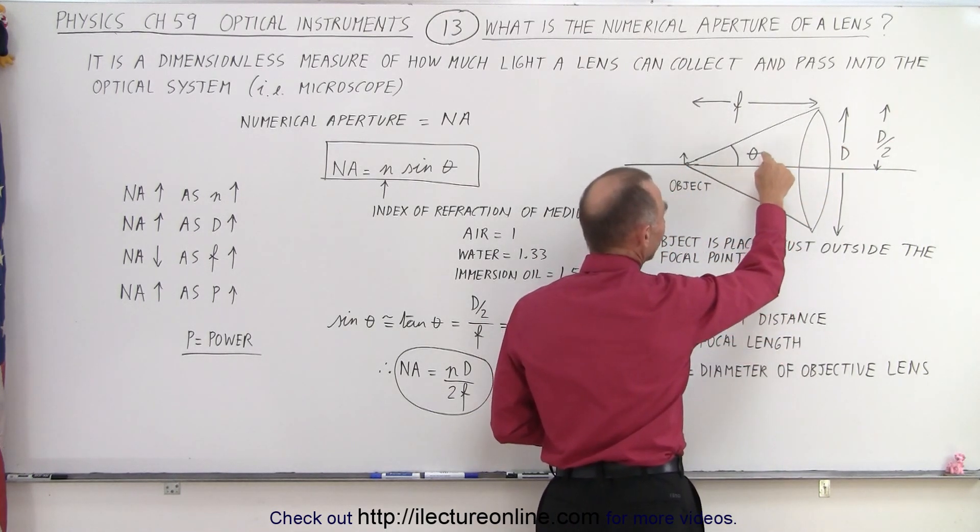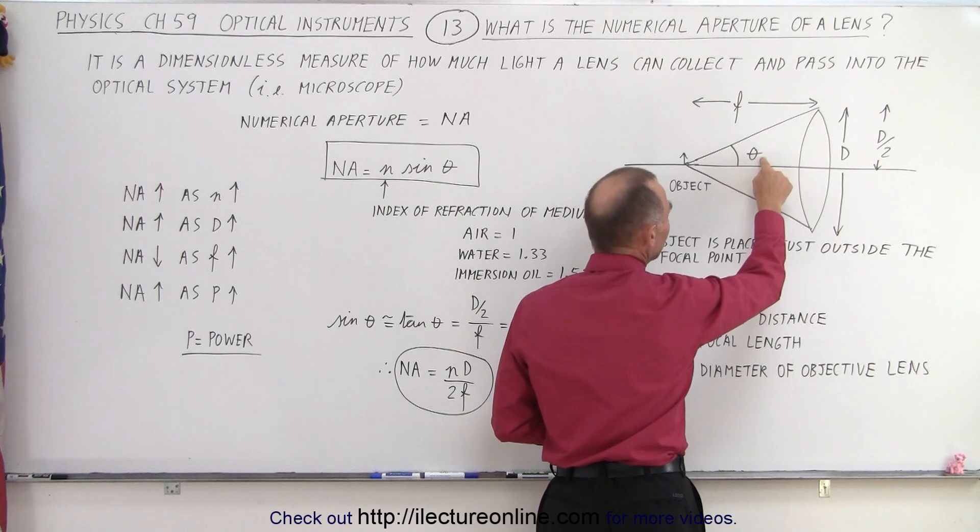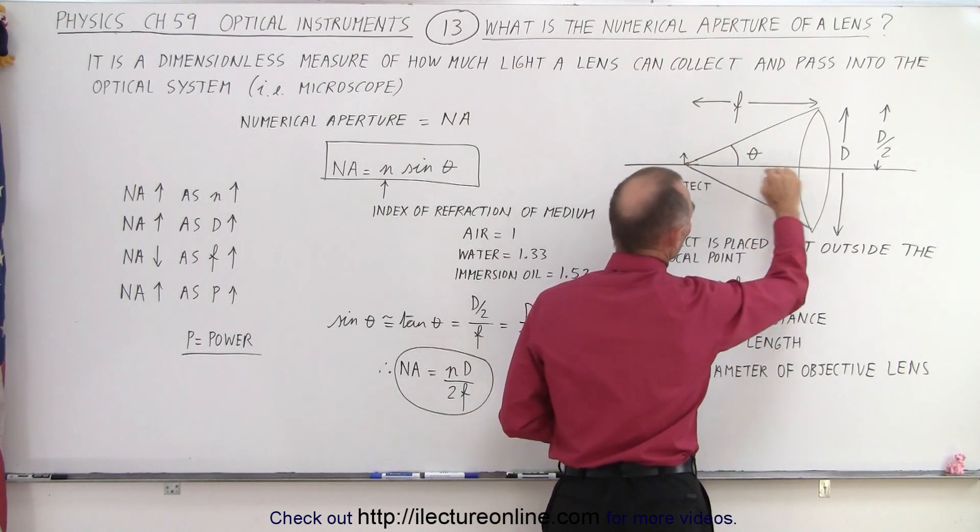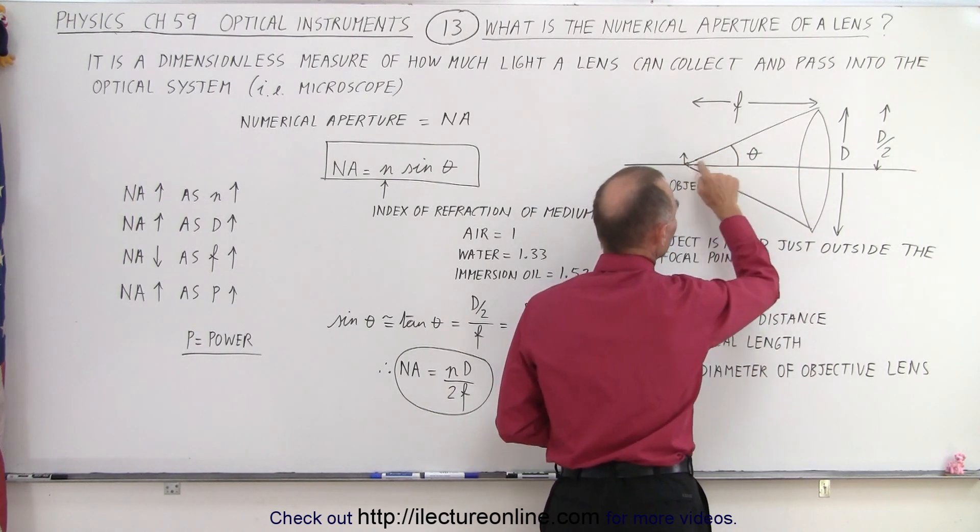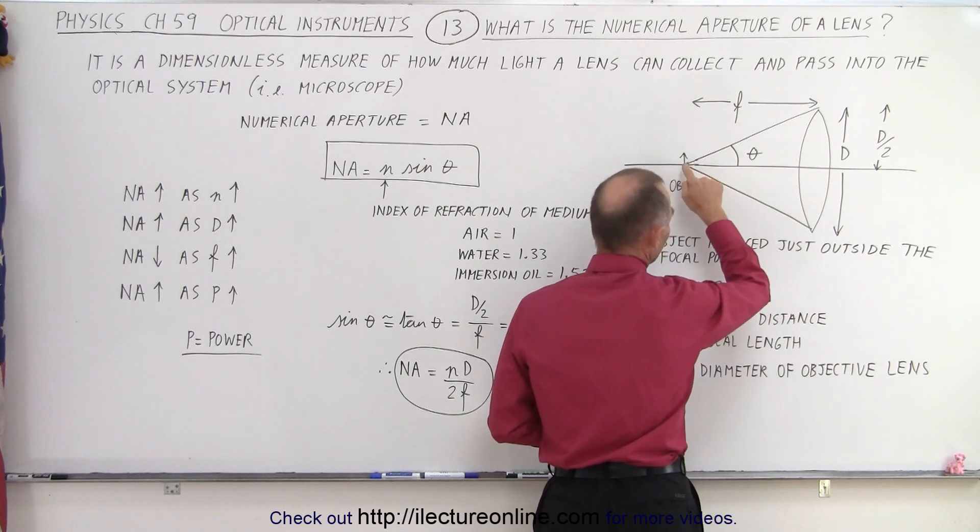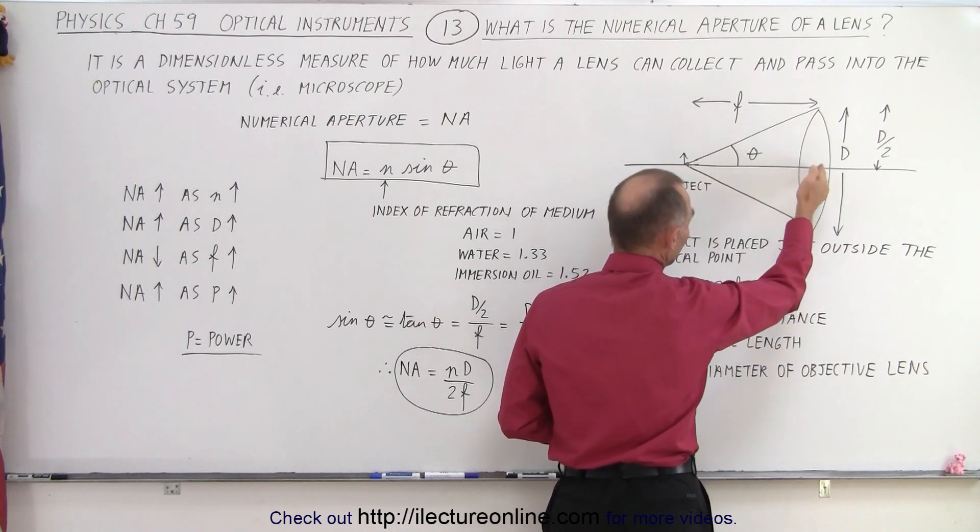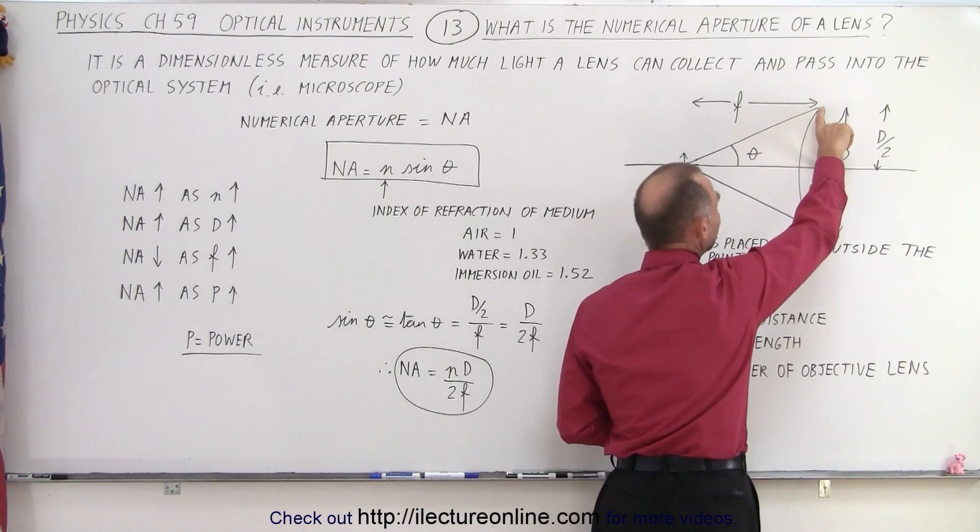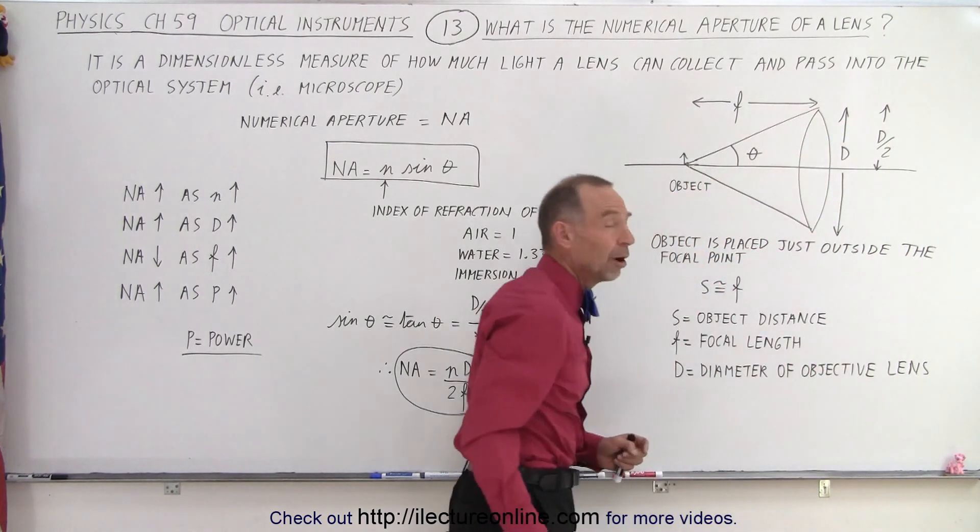And notice that the angle theta makes a relationship between the focal length, which is the horizontal distance from here to here, essentially from the focal point of where the object is placed to the lens. And then the height here is half the diameter of the lens.